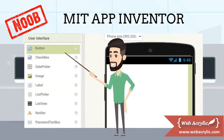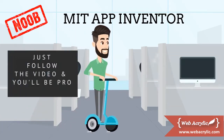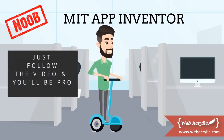For the frontend part, we just have to drag and drop the particular component that we need. The backend part is a bit tricky — we just have to drag and drop these kind of controllers. Now let's try to understand what is happening here. Whenever we press the plus button, the result is set to the summation of text box 1 plus text box 2. This is the only thing that you have to keep in mind.